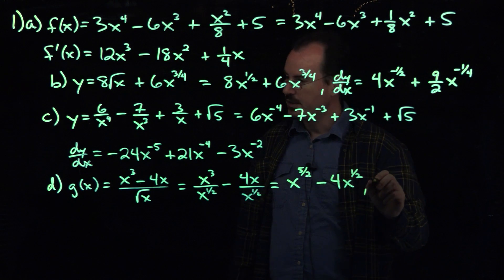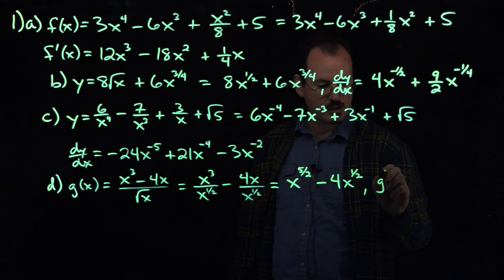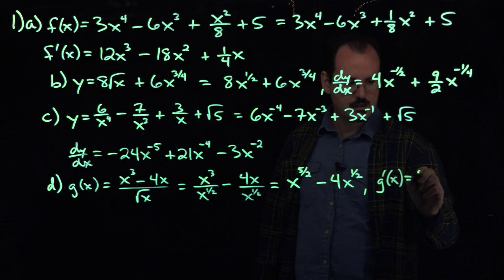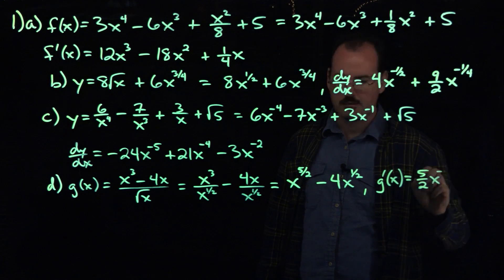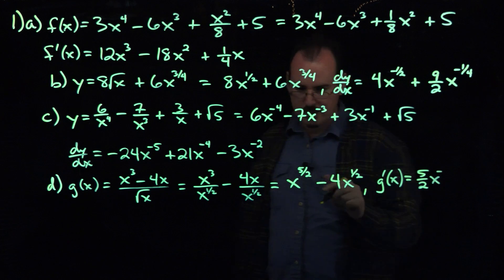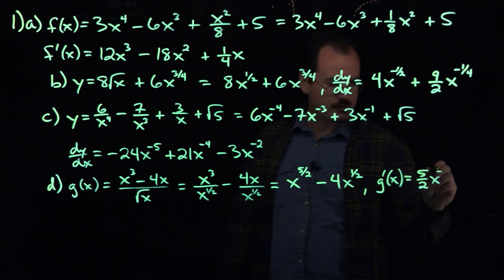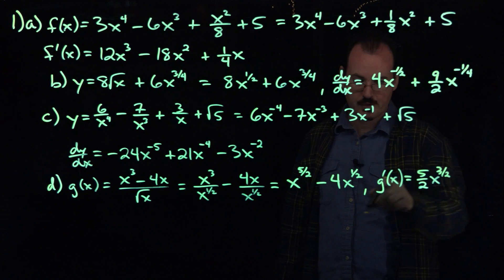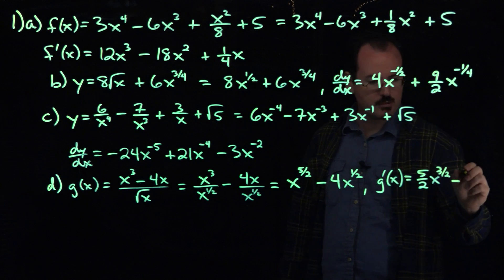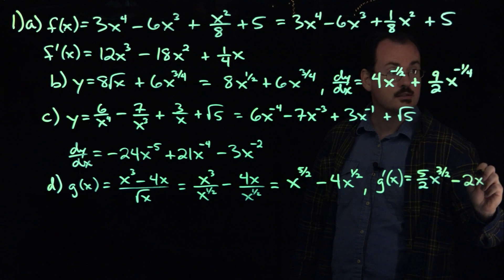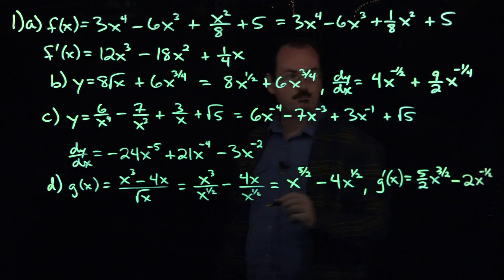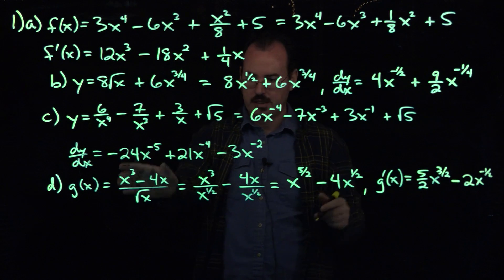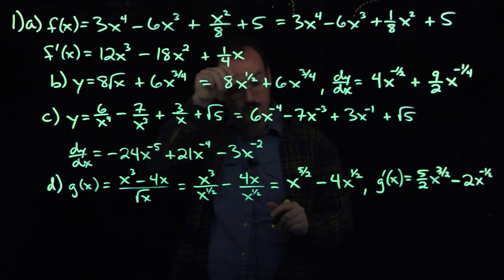I'm going to try to squeeze the derivative here so we can have room for the last one. So g prime by the power rule: 5/2 x — subtracting 1 from 5/2 gives 3/2 — so 5/2 x to the 3/2. Then the next part: put the 1/2 in front and multiply by the 4, giving minus 2x to the negative 1/2. So this is the derivative of the function; we had to rewrite it as power functions first, then took the derivative using the power rule.